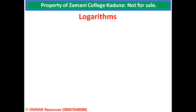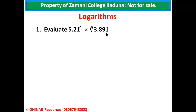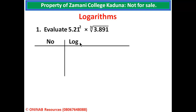Logarithms. We take our first problem: evaluate 5.21 raised to the power of 2, times the cube root of 3.891. To simplify this problem, we are going to create a table. The first column has numbers and the second column has the logarithms of the numbers. We write 5.21 raised to the power of 2, times 3.891 raised to the power of 1 over 3, since the cube root can be written as a fractional index.